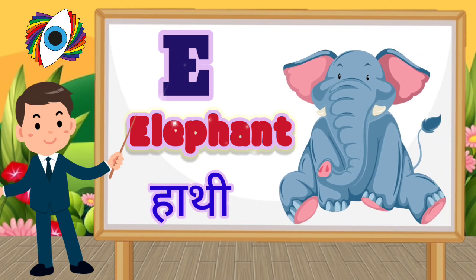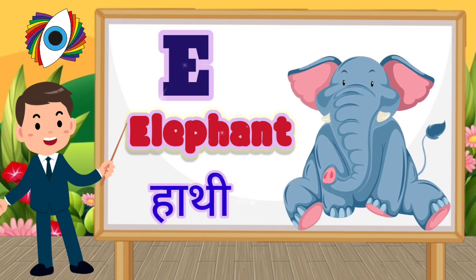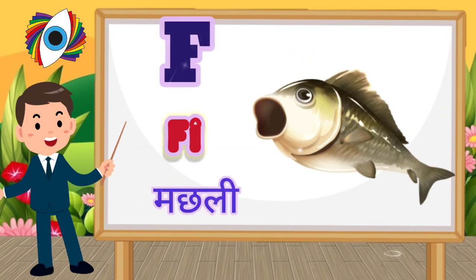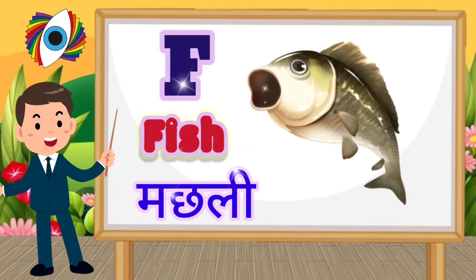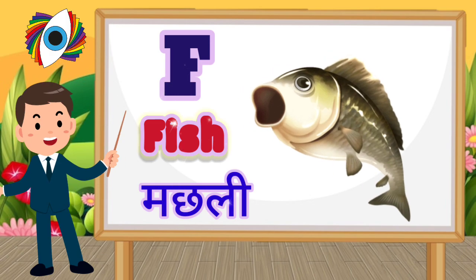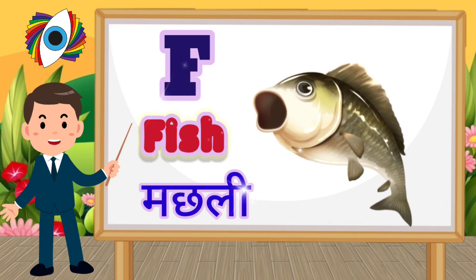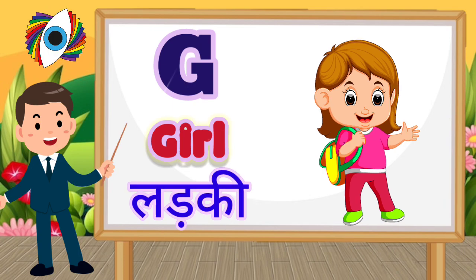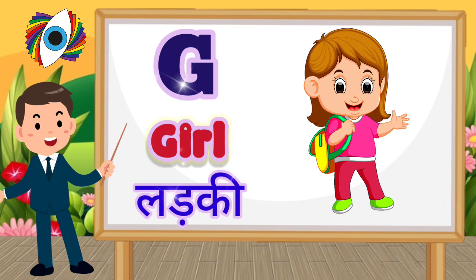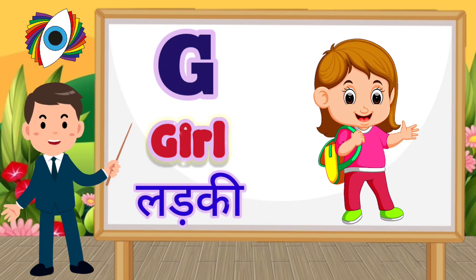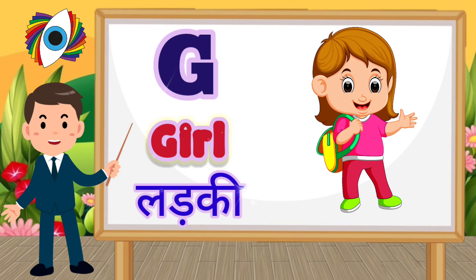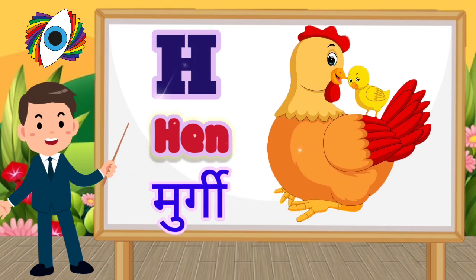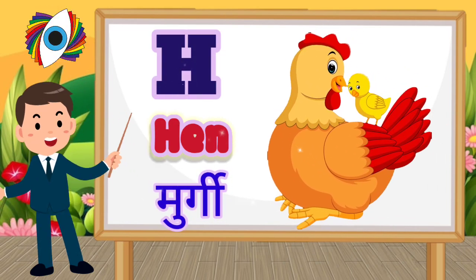E for Elephant. F for Fish. G for Girl. H for Hen.